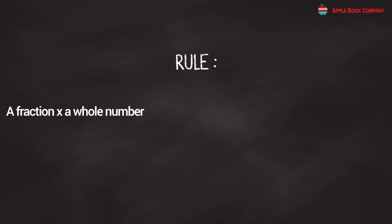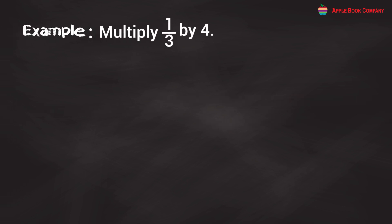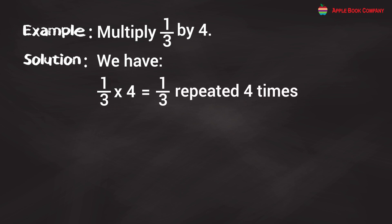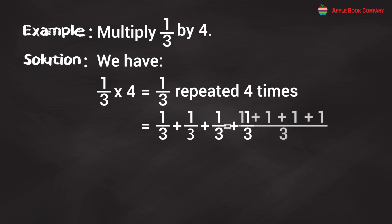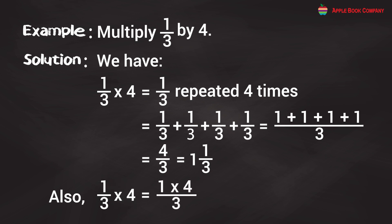Rule: A fraction multiplied by a whole number equals the numerator of the fraction multiplied by the whole number, divided by the denominator of the fraction. Example: Multiply 1/3 by 4. We have 1/3 × 4 = 1/3 repeated 4 times = 1/3 + 1/3 + 1/3 + 1/3 = 4/3 = 1 and 1/3. Using the rule: 1/3 × 4 = (1 × 4)/3 = 4/3 = 1 and 1/3.